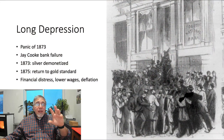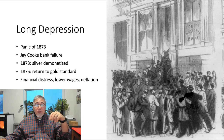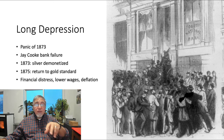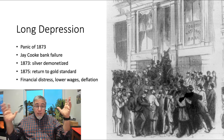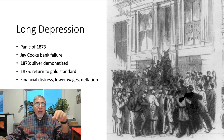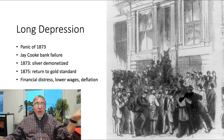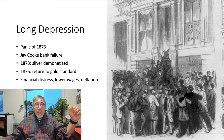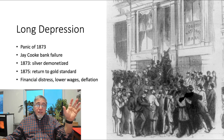The speculative bubble created by railroad financing burst in the Panic of 1873, which began a period called the Long Depression that lasted until nearly the end of the century and which, before the Great Depression of the 1930s, was known simply as the Depression. The panic began with the failure of the largest bank in America, owned by railroad speculator Jay Cook. The United States government's decision to stop coining silver dollars in 1873 and to return to the gold standard in 1875 exacerbated this financial distress.